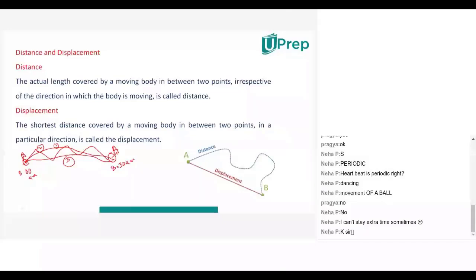Let us say this is one object. The initial position of this object is A, and the final position is B. Suppose the first time it traveled like this, and the second time it traveled like this. This is the first path and this is the second path. Which of these two paths is shortest — second or first one? The second path is the shortest.